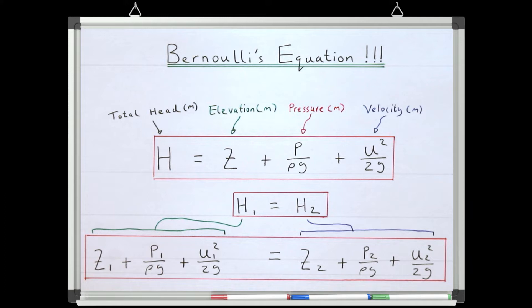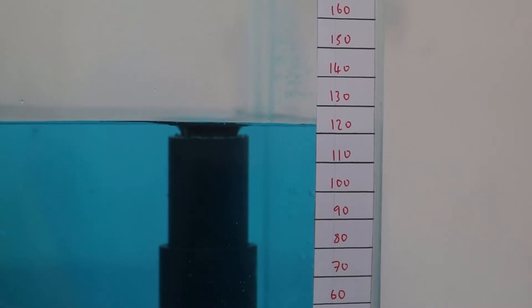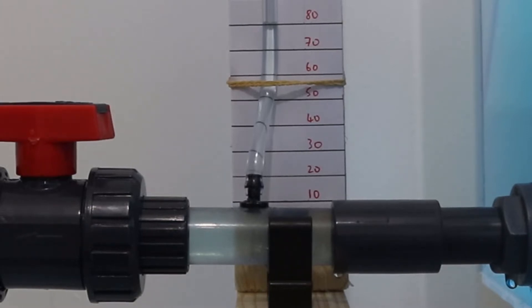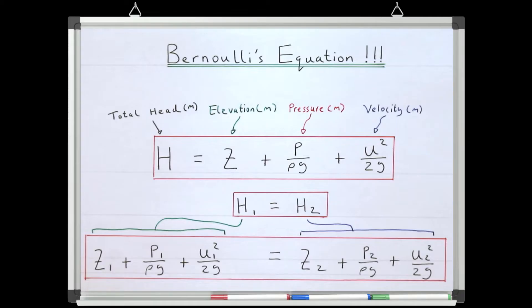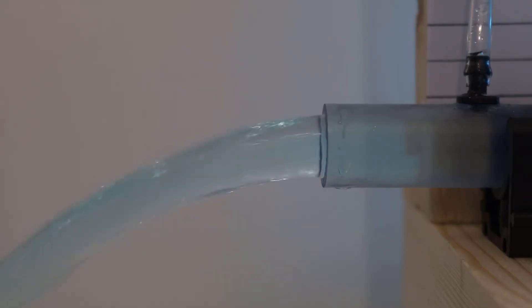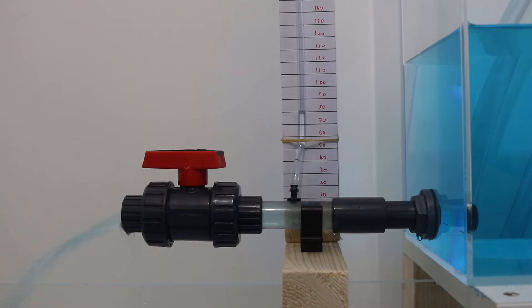In the last video we learnt about Bernoulli's equation, which tells us that the total pressure head in a fluid can either be in the form of elevation, pressure, or velocity. If we assume an ideal fluid and therefore that there are no losses in the system, we can apply Bernoulli's equation between two points. In the last lesson we used this to work out the velocity of fluid in a pipe, and in this lesson we're going to use it to work out the pressure at a certain point in a pipe.